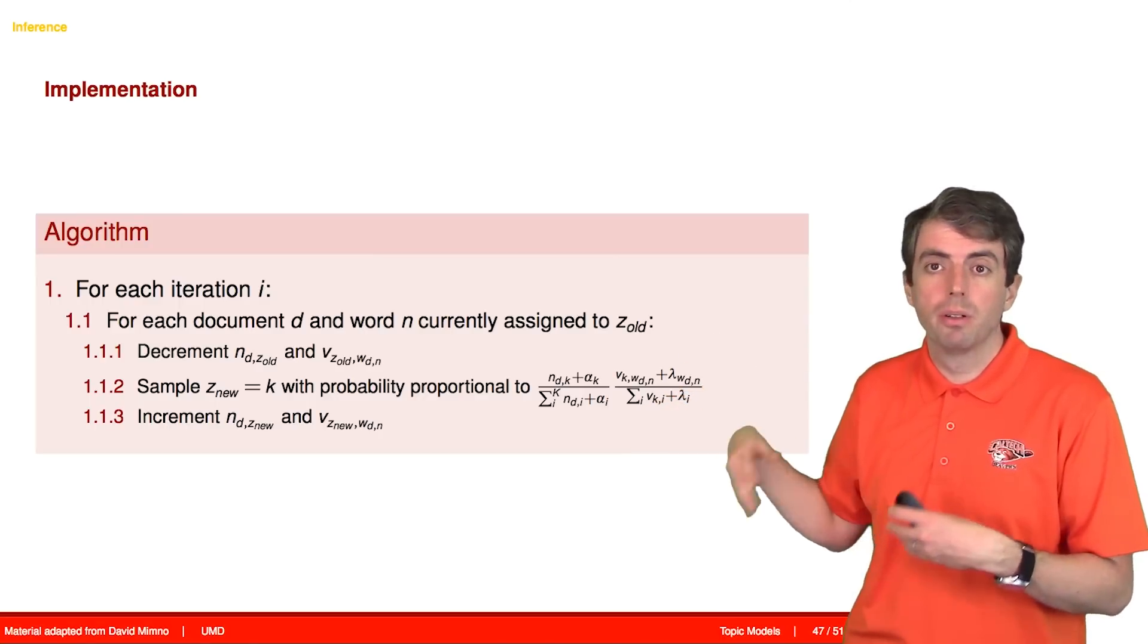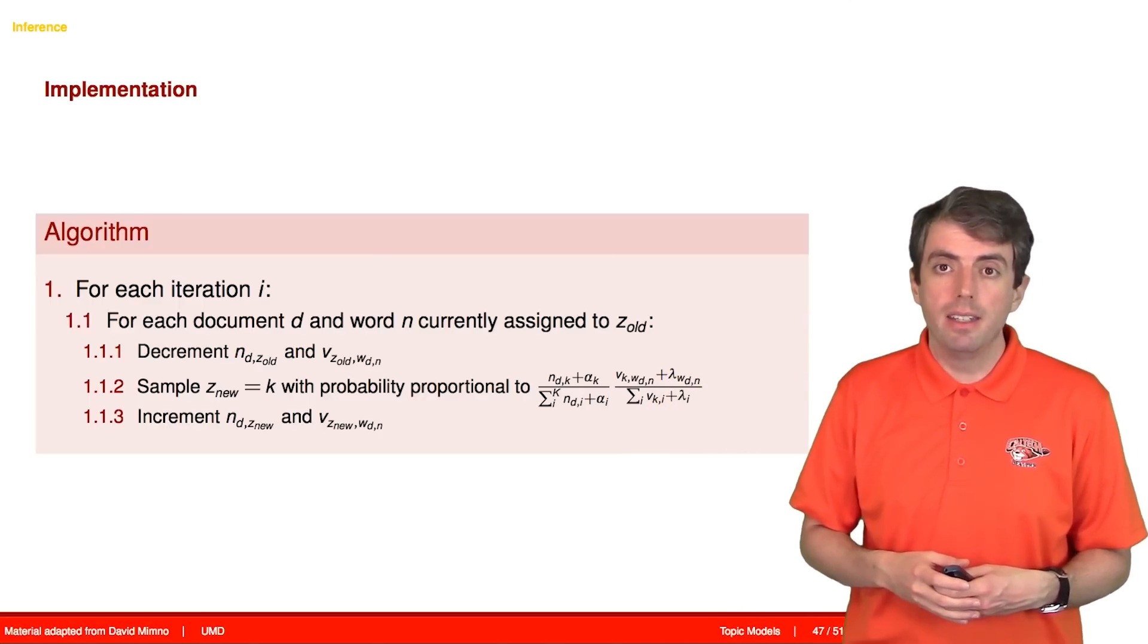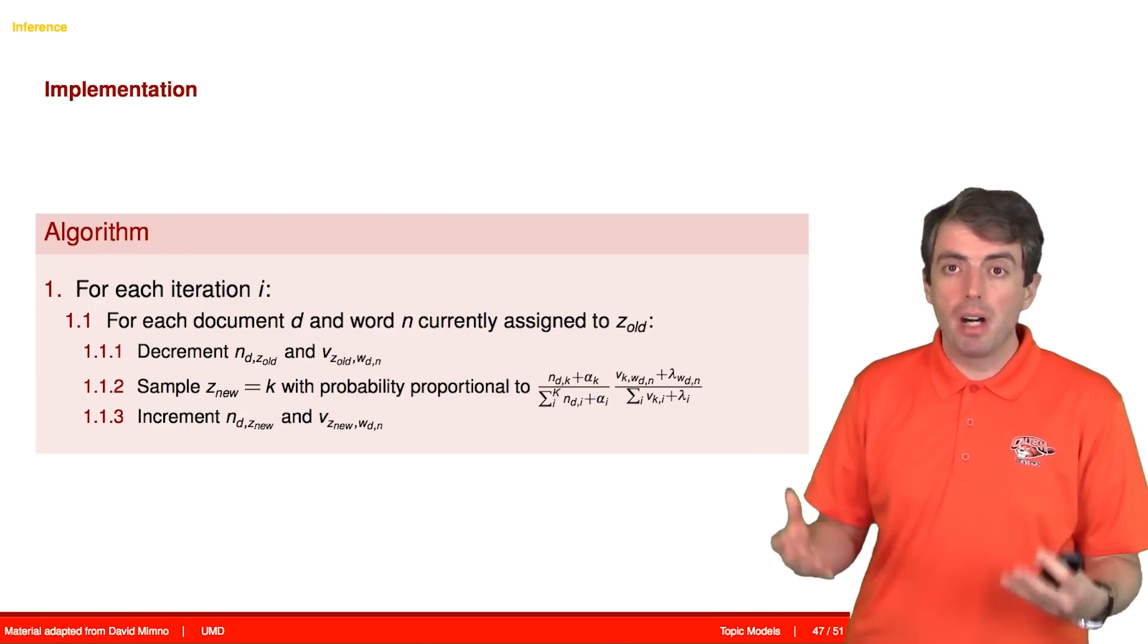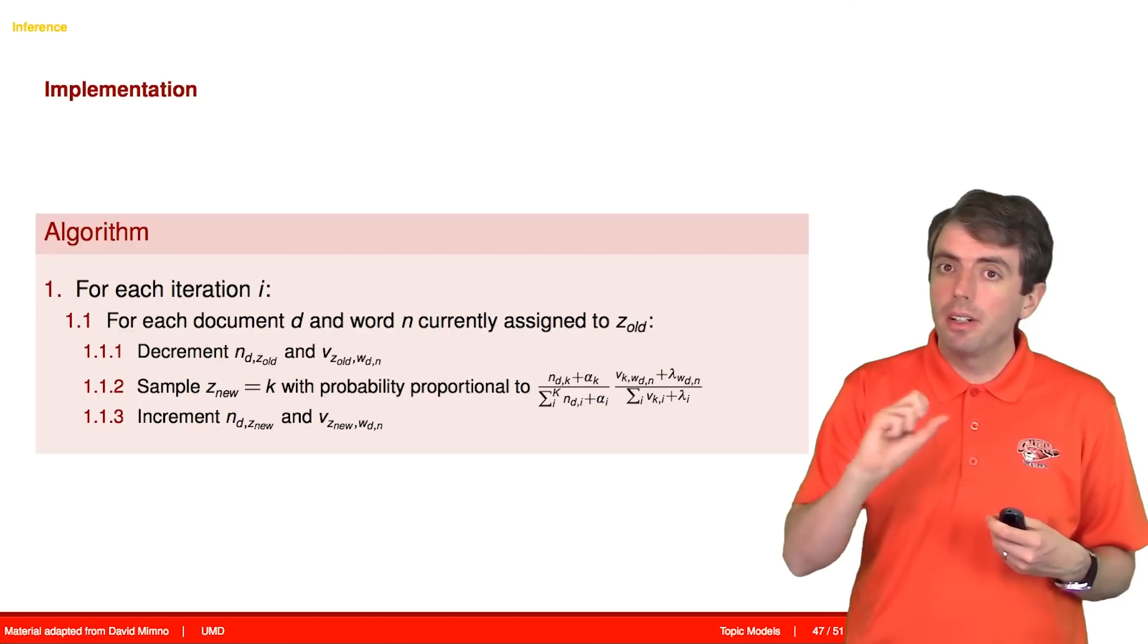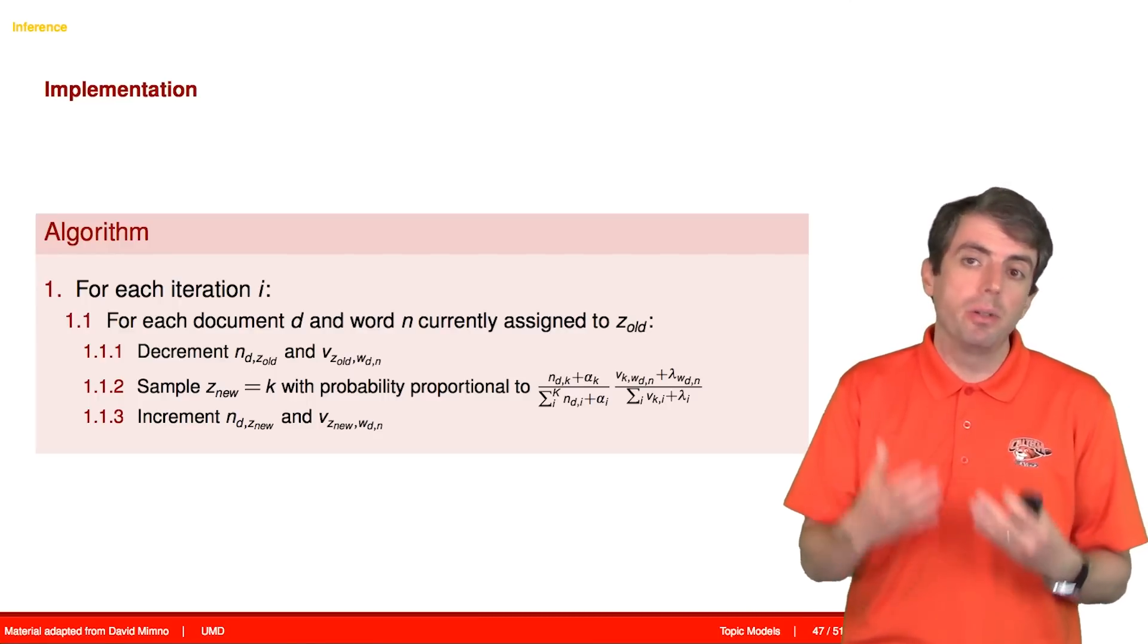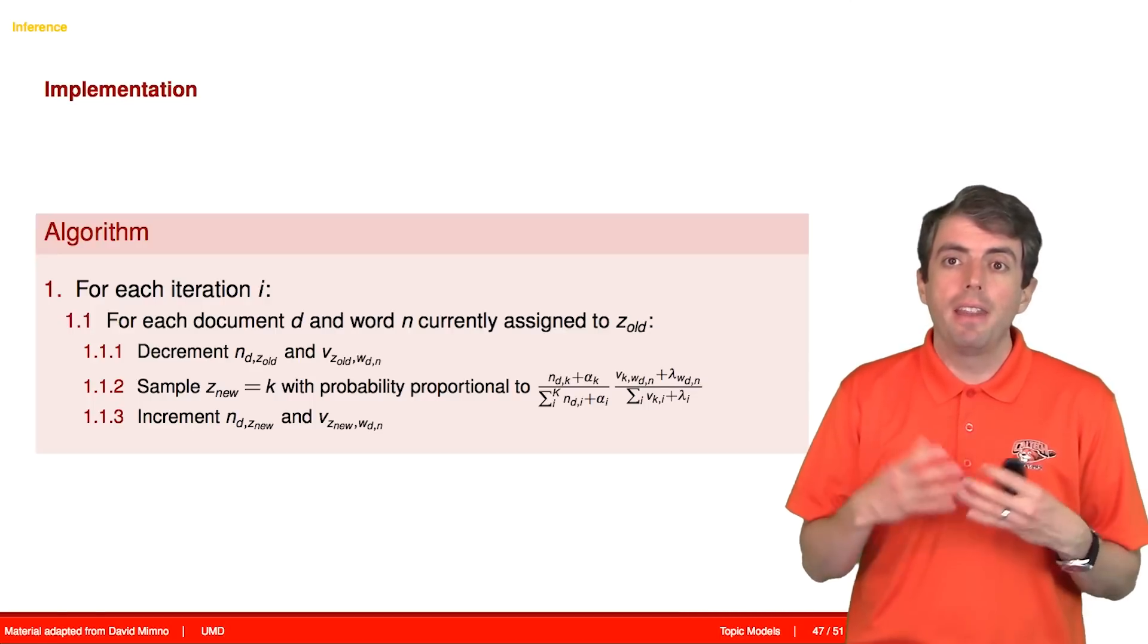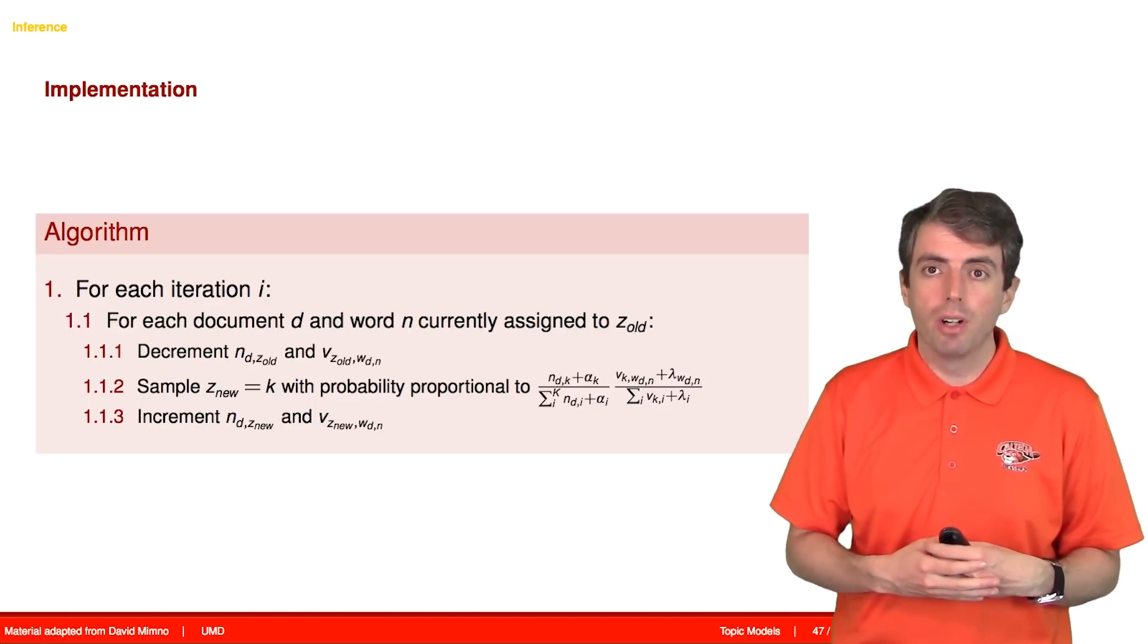is relatively straightforward and lets you gain insights about what's going on inside these datasets. Once you understand how to go from a model like latent Dirichlet allocation to an inference algorithm, you can then start tweaking the model to have it generate the kinds of things that you're interested in and then create new models that reflect that. And that allows you to build even deeper insights of large datasets.